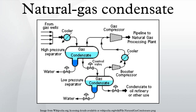Condensate wells produce raw natural gas along with natural gas liquids. Such gas is also non-associated gas and often referred to as wet gas.